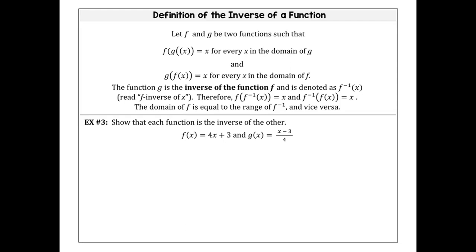We're going to look at f of x equals 4x plus 3, and g of x equals x minus 3 divided by 4. We're going to determine whether they are inverses or not. To do that, we're going to do two compositions.